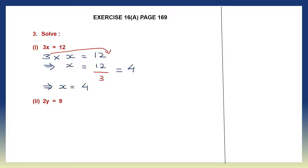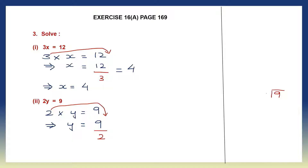Question 2: 2y equals 9, that means 2 into y equals 9. So to solve for y, we leave y on the left hand side, 9 on the right hand side, and transpose 2 to the right hand side. Because it is multiplication, it becomes division here. So now it's 9 by 2. Let's divide 9 by 2. 2 fours are 8, remainder 1. I put a decimal point and bring down a 0. Now the number is 10. 2 fives are 10. So the value of y is 4.5.